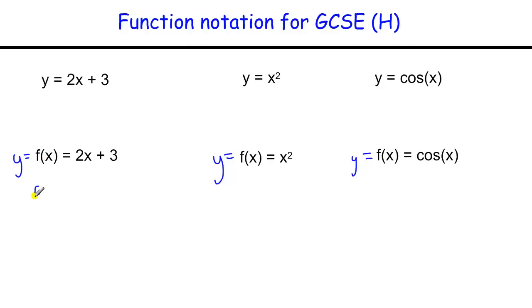If I was asked to calculate f(1), all that we're doing there is replacing the value of x with the number 1. So we have two lots of 1 plus 3, which is 5. And if we're asked to work out f(2), we'd have 2 times 2, which is 4 plus 3, which would be 7.